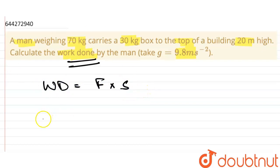So what is the net force acting on the man? Net force will be equal to 70 kg due to its own weight and 30 kg due to the weight of the box. So 70 plus 30 into g.